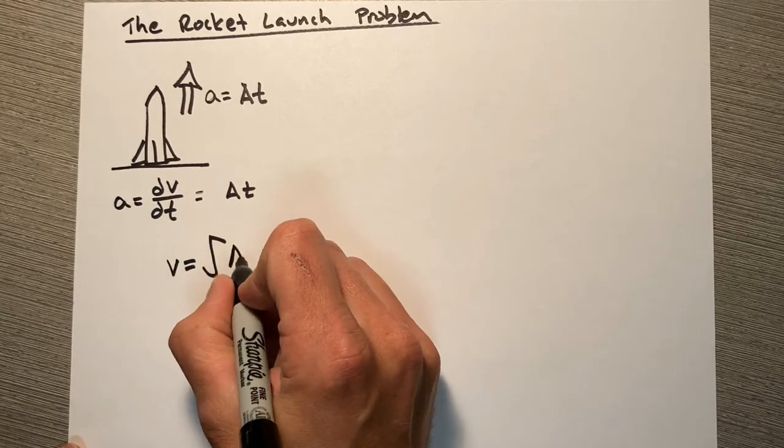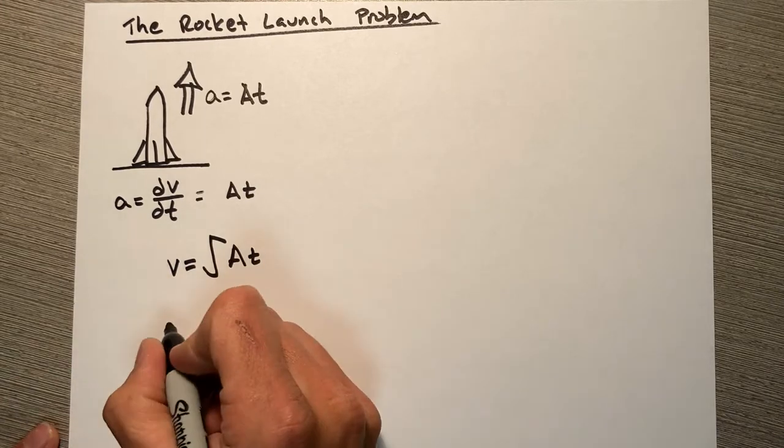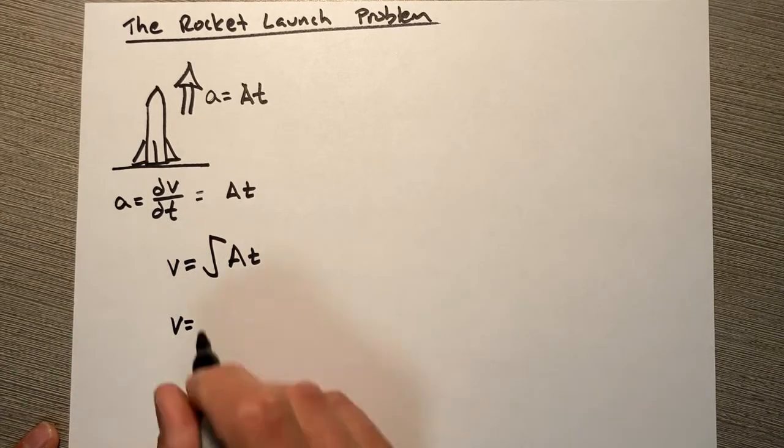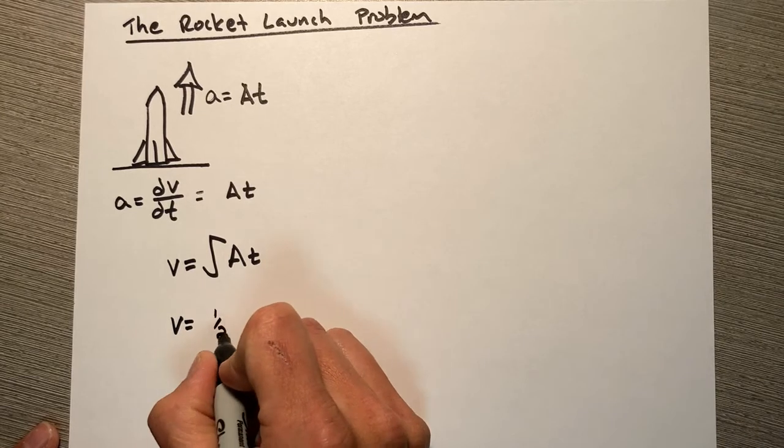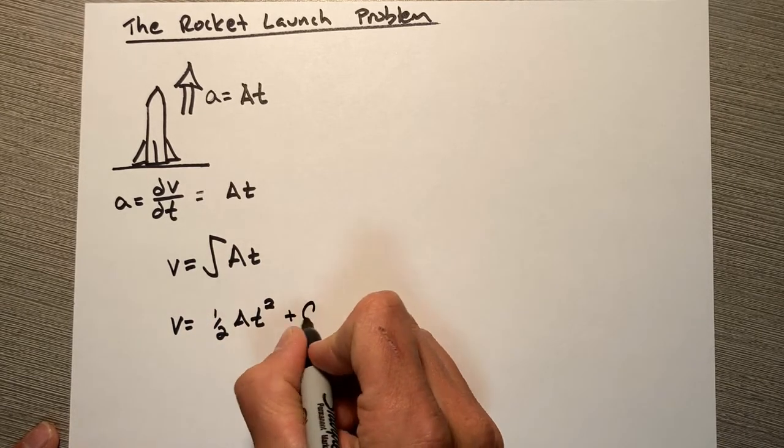So the integral of At—I'm taking the definite integral here—so velocity is going to be one half A t squared plus c.